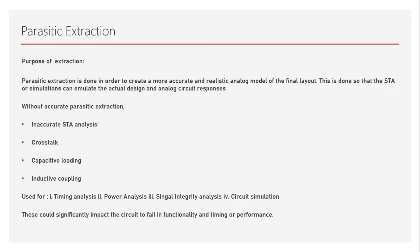Parasitic extraction is also used for signal integrity analysis, where crosstalk and noise are fully characterized and simulated. It can be used for circuit simulation as well, though large ASIC designs typically don't go through full circuit simulation — only small pieces or FPGA-based designs might. Without an accurate analog model, these issues could significantly impact circuit functionality, timing, and performance.